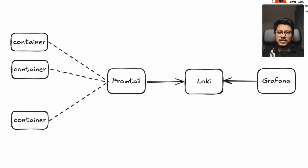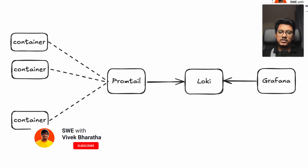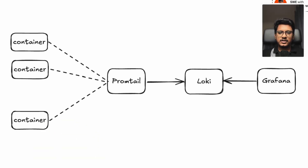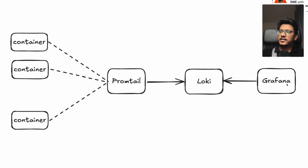When you're running multiple microservices, tracking down issues across different containers is a nightmare without centralized logging. That's where Loki and Promtail come in — they let us collect and search logs across all services and visualize them using Grafana, all in real time. This setup brings production-grade observability without needing to install heavyweight agents. In this diagram, Promtail pulls information from all containers, transforms logs, and sends the data into Loki. Grafana as a UI tool fetches data from Loki to visualize and monitor.